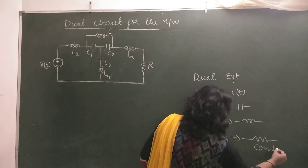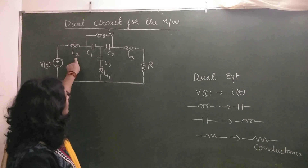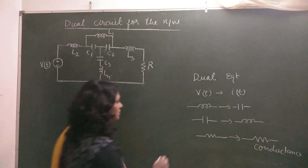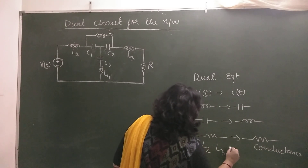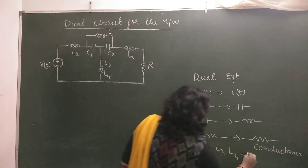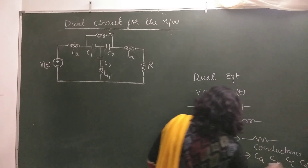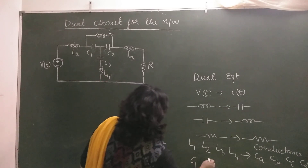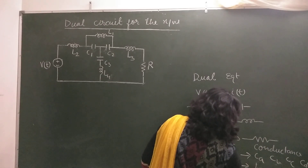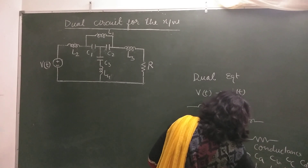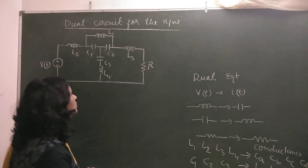This is conductance — only the unit will change. The notation I will use: there are 4 inductances L1, L2, L3, L4. After converting them, I will assign them CA, CB, CC, and CD. There are 3 capacitances: C1, C2, and C3. After converting them into their dual equivalents, I will assign them LA, LB, and LC.